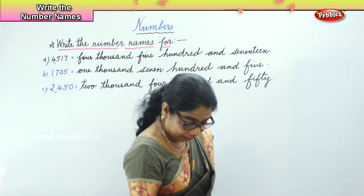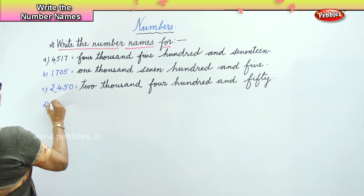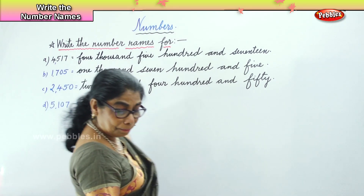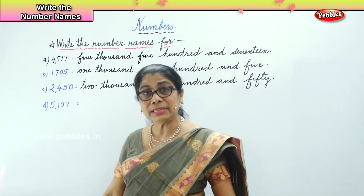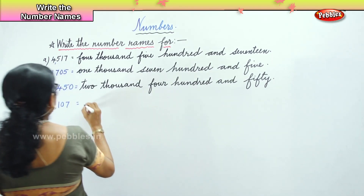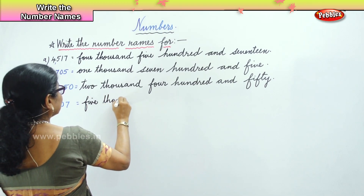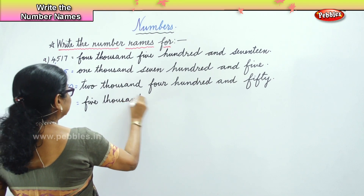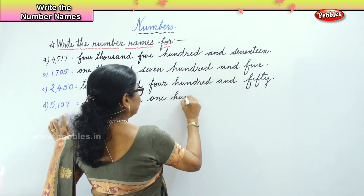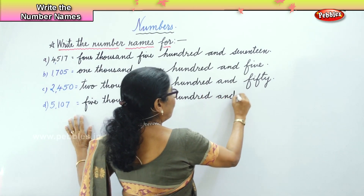The next number is 5107. Read that number. Five thousand one hundred — good — and seven. Very good. Five thousand one hundred and seven.